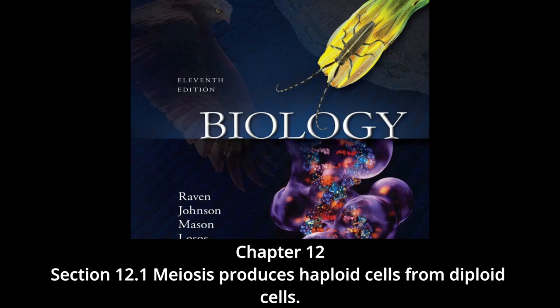Reduction division: it was clear even to early investigators that gamete formation must involve some mechanism that reduces the number of chromosomes to half the number found in other cells. If it did not, the chromosome number would double with each fertilization, and after only a few generations the number of chromosomes in each cell would become impossibly large. For example, in just 10 generations the 46 chromosomes present in human cells would increase to over 47,000 — 46 times 2 to the 10th.